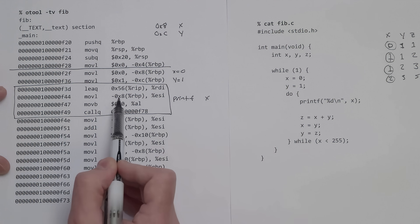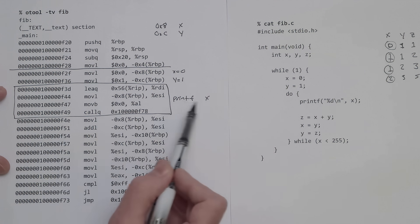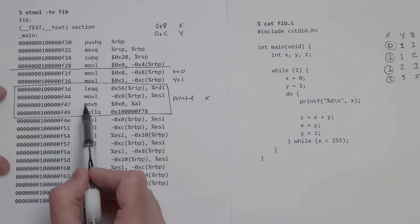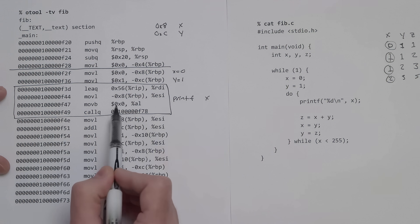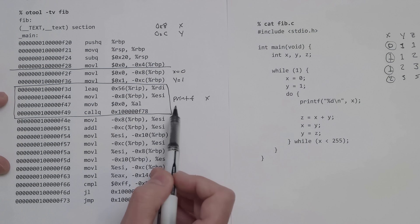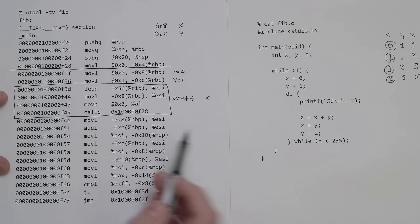Of course, 0x8, we recognize that, that's x, so we're printing x. Then the call actually makes the call to printf. This corresponds to that printf.